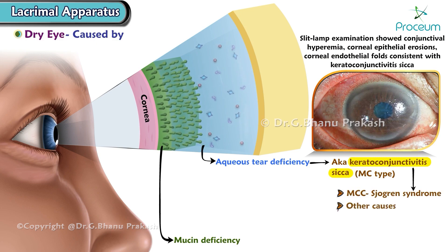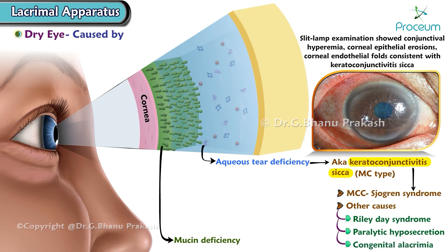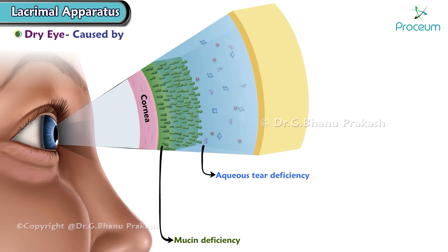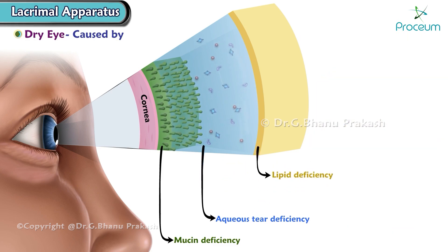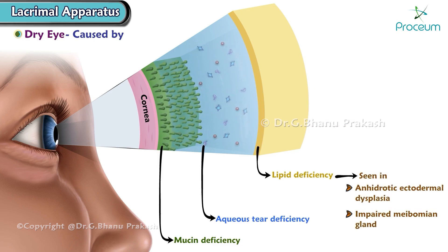Other causes of aqueous tear deficiency are Riley-Day syndrome, paralytic hyposecretion, and congenital alacremia. 3. Lipid deficiency is seen in anhidrotic ectodermal dysplasia and impaired meibomian gland function.